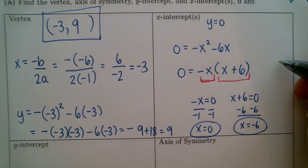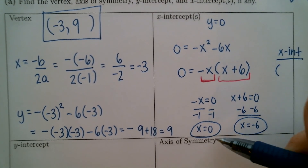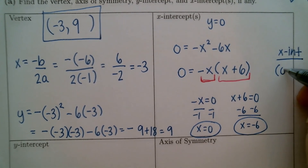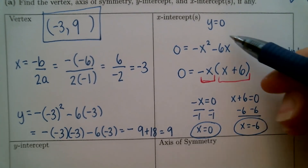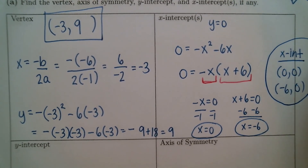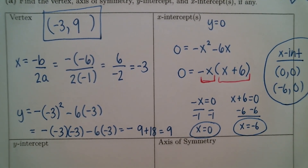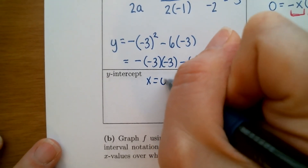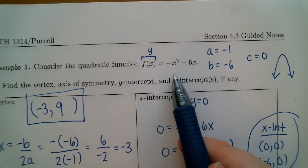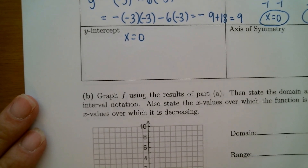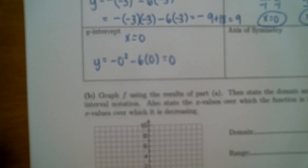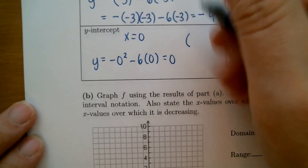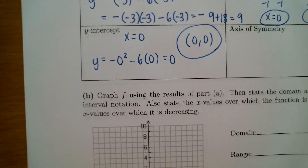You can leave the x-intercepts as values or write them as ordered pairs: the point (0, 0), which is the origin, and (negative 6, 0). For the y-intercept, set x equal to zero in the original equation. We get y equals negative 0 squared minus 6 times 0, which gives us zero. So the y-intercept is also at the origin — the origin is both an x-intercept and a y-intercept.